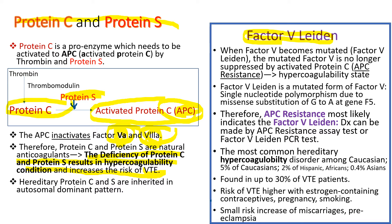Factor VIIIa is related to protein C. We know that activated protein C (APC) inhibits factor V, but if factor V becomes mutated, APC will be unable to block it, and the unstoppable factor V continues the clotting process, resulting in a hypercoagulability state. Factor V Leiden is a mutated form of factor V caused by a single nucleotide polymorphism—a missense substitution of guanine to adenine at the gene F5. Therefore, APC resistance (activated protein C resistance) most likely indicates factor V Leiden. The diagnosis can be made by either the APC resistance ratio test or direct factor V Leiden testing.